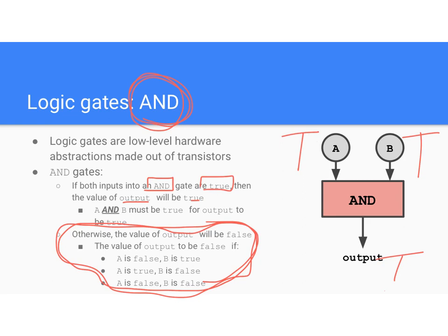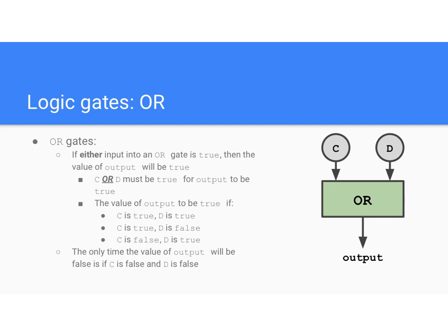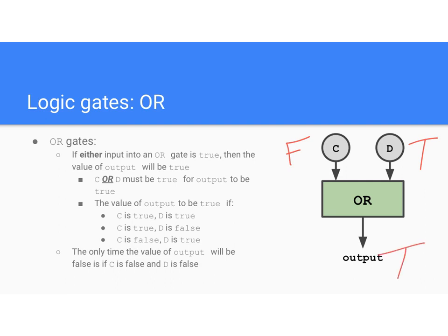There are also OR gates. For an OR gate, if either C or D is true, the output will be true. If C is true and D is false, an OR gate says only C or D had to be true — since C was true, the output is true. And if C is false but D is true, that's okay too, because either one being true is enough, so the output is true.